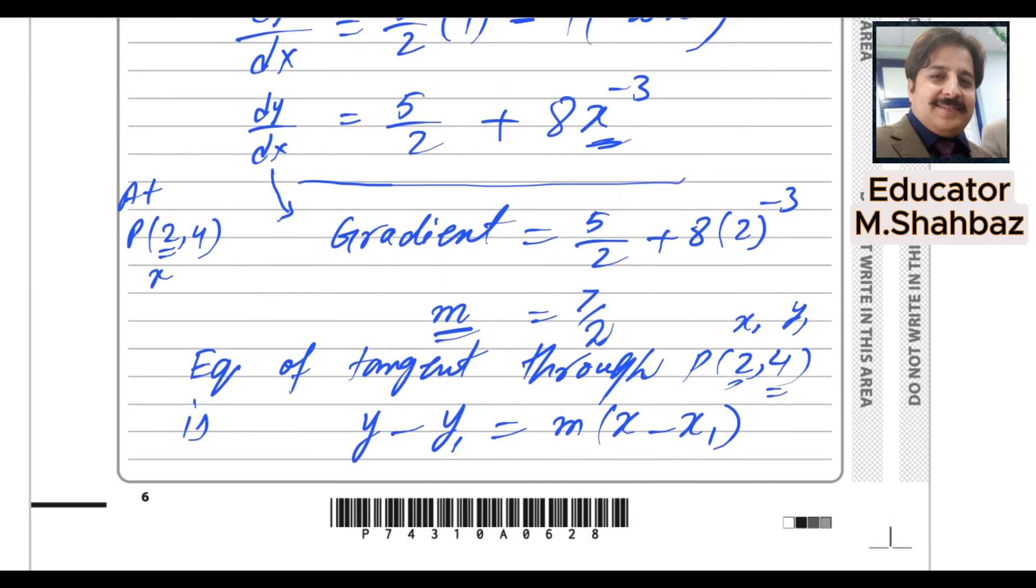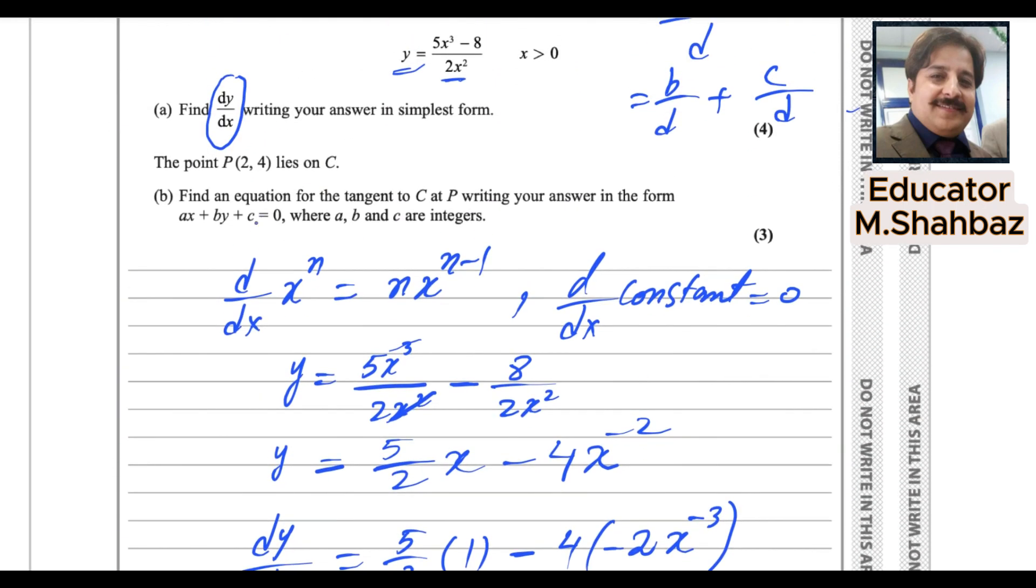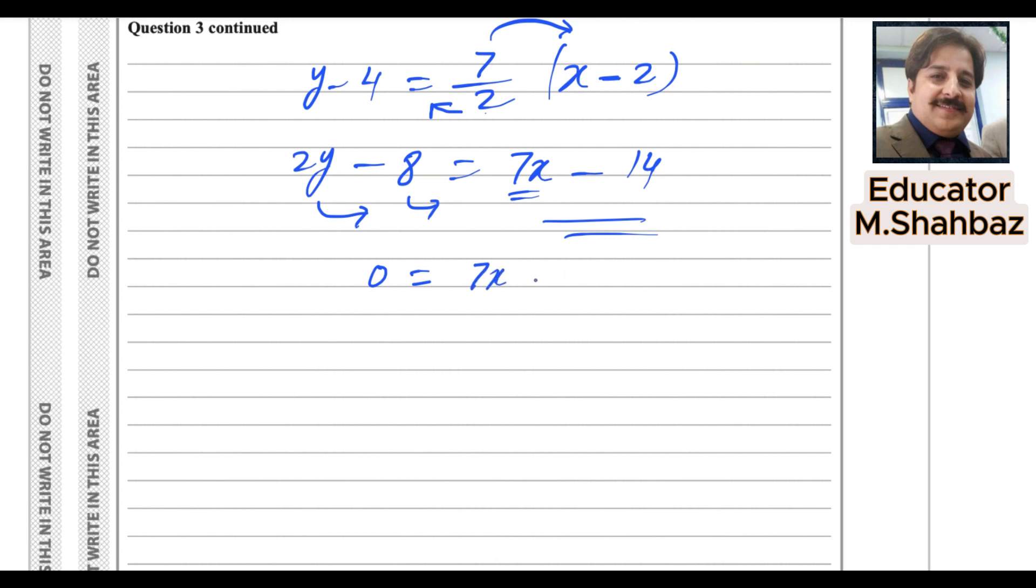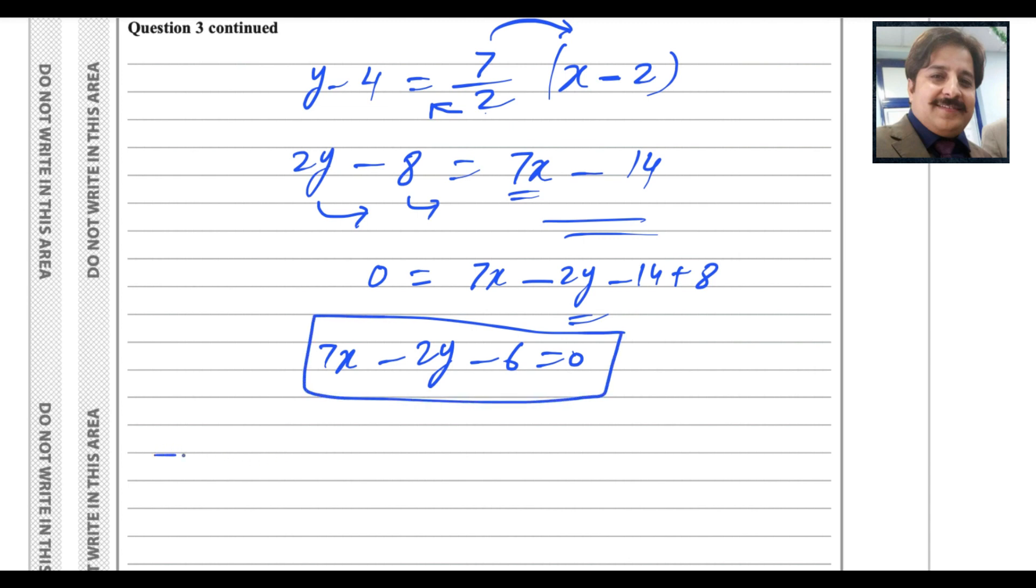So if you notice that we have to write the equation in this form. So everything should be on the left side of the equation. So 7x minus 2y minus 14 plus 8. So this is positive. If you bring it on the right side, it becomes negative. And this is negative and it makes positive. So our answer is 7x minus 2y minus 14 plus 8 makes minus 6 equals to 0. So this is the required equation of tangent. And finally, question 3 is done.